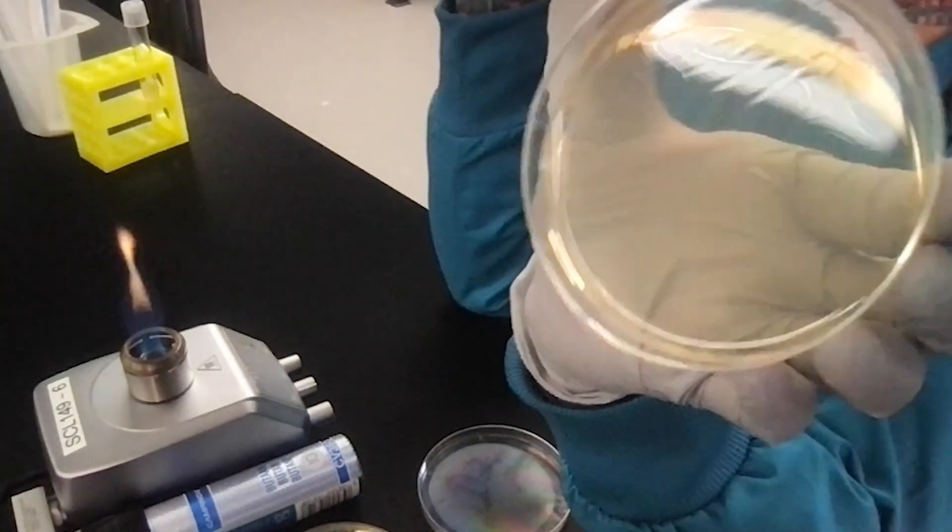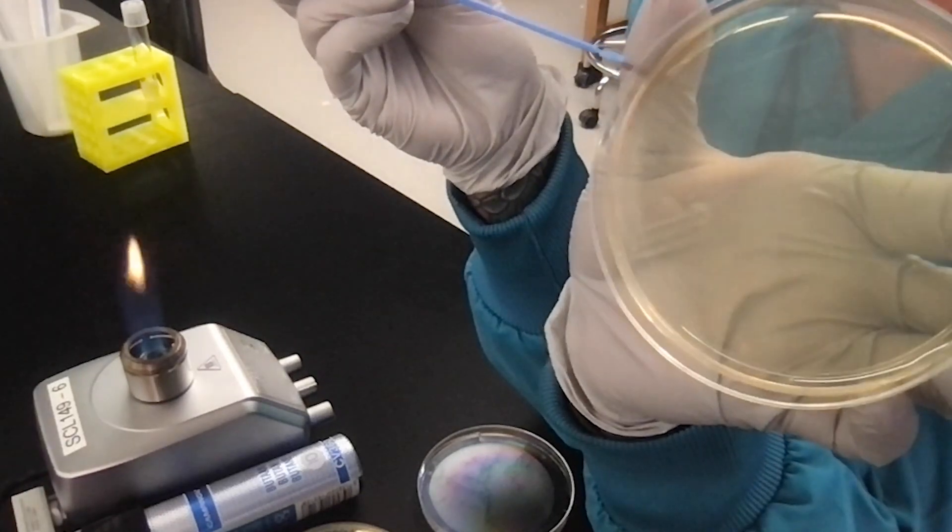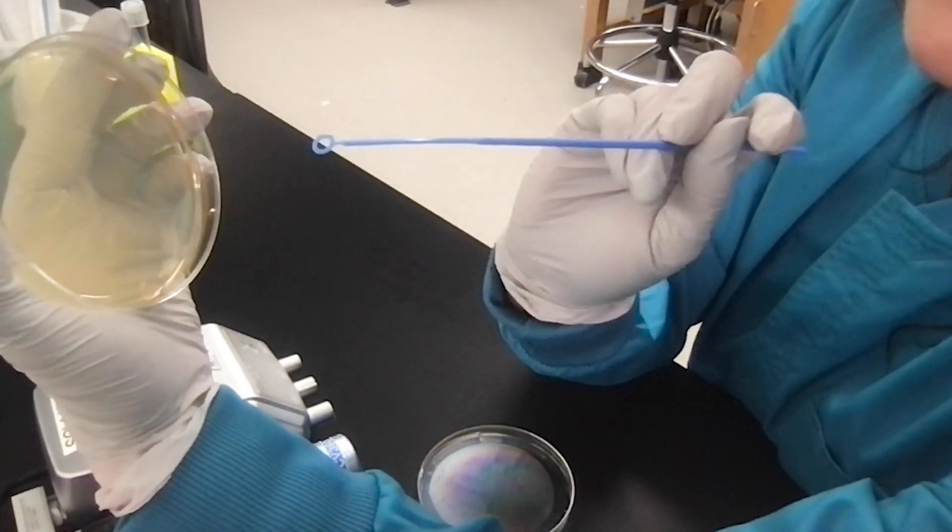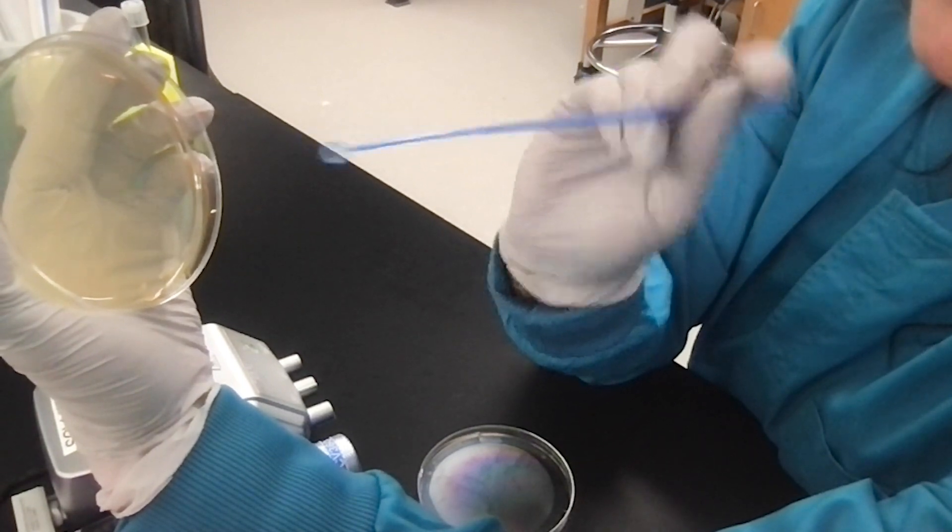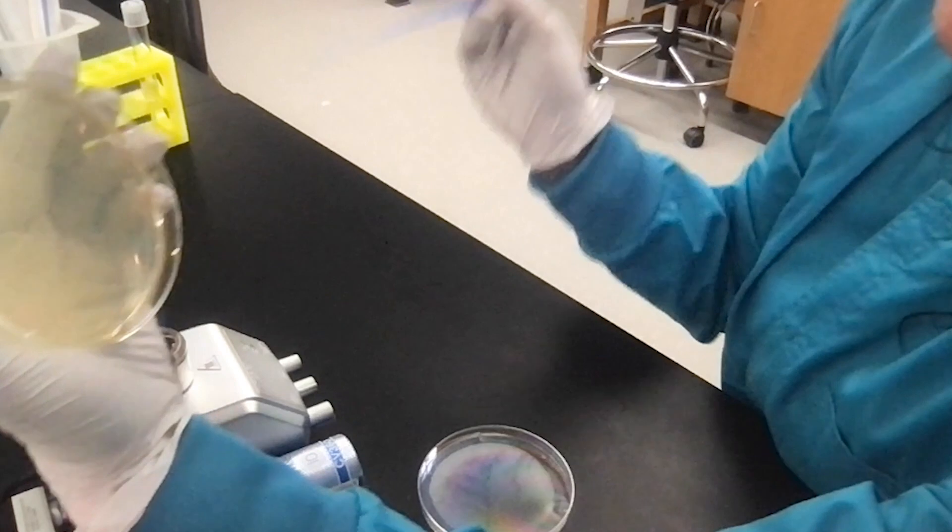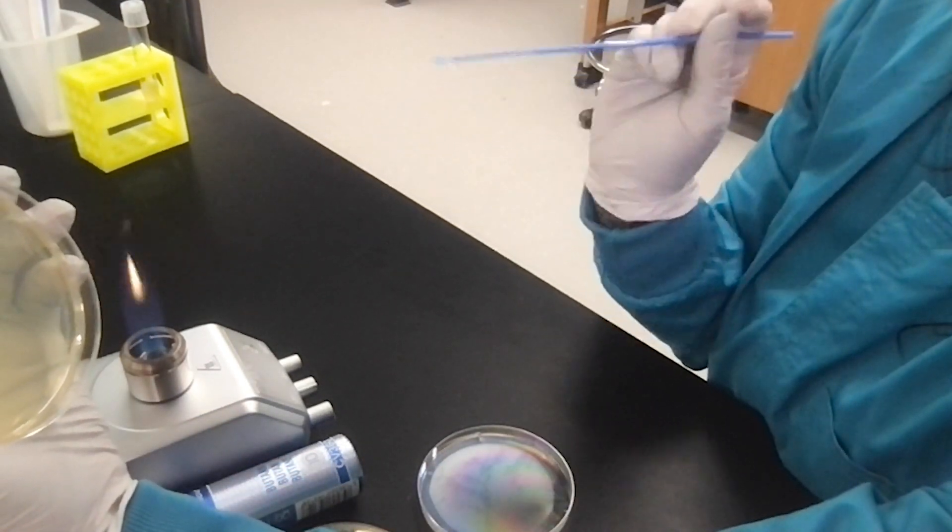So if the light catches it, you will be able to see that I have some streaks up here at the very top. Now that I made that first streak, I'm going to toss this inoculation loop and get a fresh one, because this is plastic. If you are working with a metal one, this is where you would then hold it over the flame to sterilize it before you make the next streak.